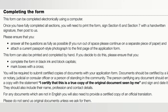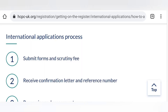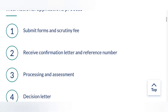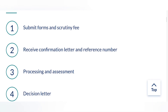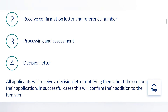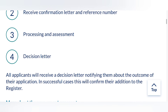Once you've filled the forms, sent them to the HCPC, and paid your scrutiny fee, that concludes Step 1 of your HCPC application. Moving on to Step 2: receiving a confirmation letter and a reference number from the HCPC.